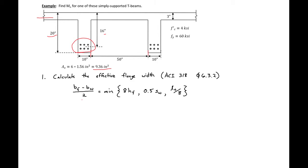So the first step is to calculate the effective flange width. We want to know what is the width of the flange that will be engaged for one T-beam. We can do this using our ACI provisions looking at 8hf. So 8 times 3 inches is 24 inches. 0.5 SW, so space between the webs, 50 inches is 25 inches.